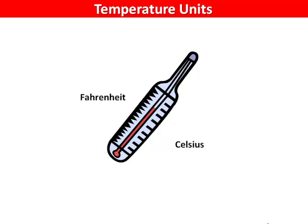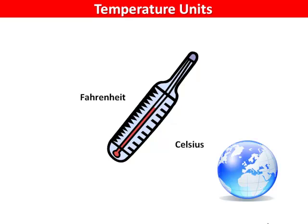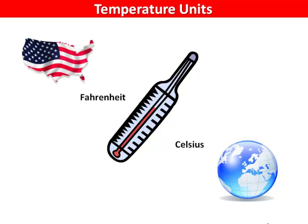The Celsius scale was named after a Swedish astronomer named Andrew Celsius and is used in most parts of the world. The Fahrenheit scale is named after German physicist Daniel Fahrenheit and is only used in a handful of countries, including the United States. Many thermometers indicate both scales.